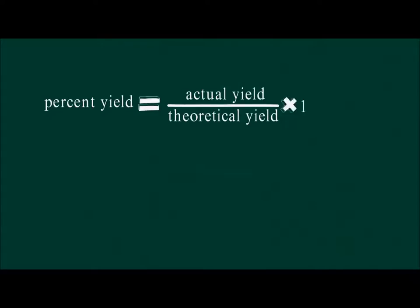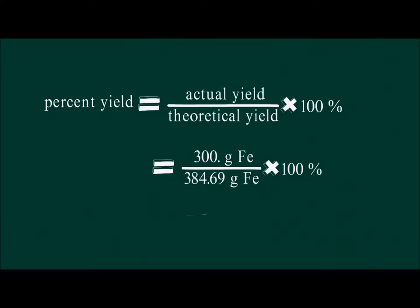Now we can move on to the percent yield. The formula for percent yield is the actual yield divided by the theoretical yield multiplied by 100. Remember to use your non-rounded mass of iron in the calculation. The percent yield of this reaction is 77.9%.